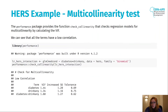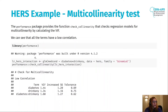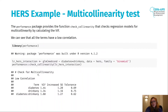For a more numerical approach, we can use the performance library — install it before use. It has a function called check_collinearity, where we pass our glm model (the one with the interaction between diabetes and drinkany). Running it says there is a low correlation between diabetes and drinkany — so we can say we probably don't have multicollinearity between the terms of our model.